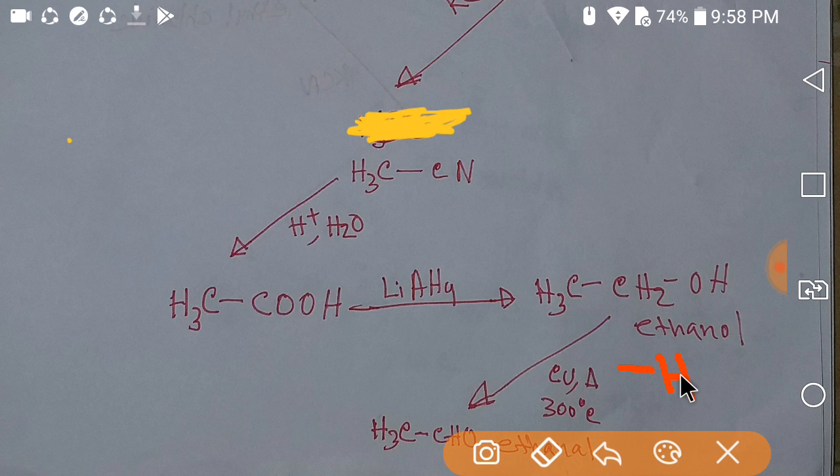And we get ethanal. Now we will understand how to convert ethanal to methanal. To convert ethanal to methanal, we have to decrease or remove one carbon from the chain. Our mother compound for this is an amide, so we have to convert this compound to an amide.